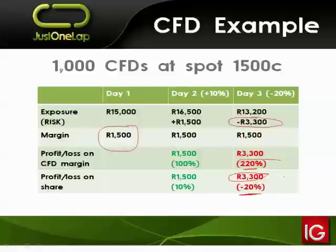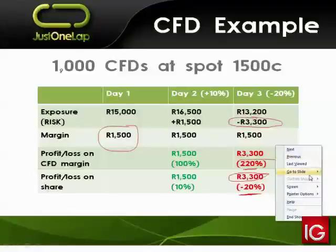The person on the CFD versus the person who bought the share are making or losing exactly the same amount of money. The key difference is what you paid: the share buyer paid 15,000, while the CFD trader only paid 1,500 margin.